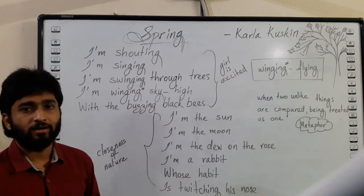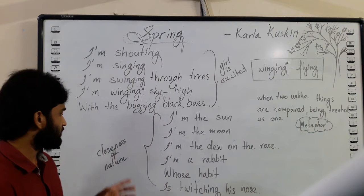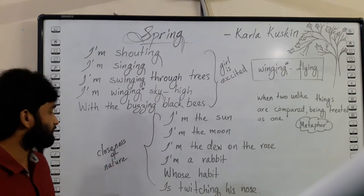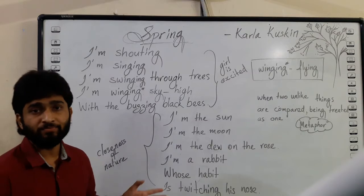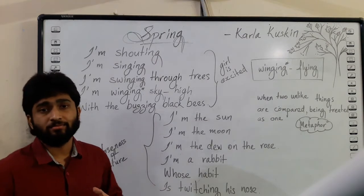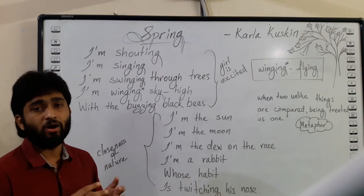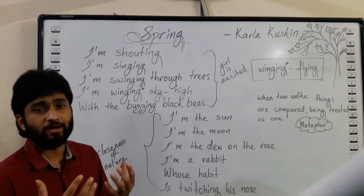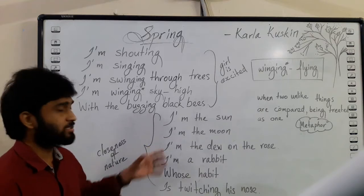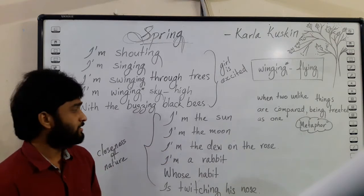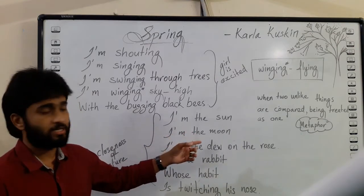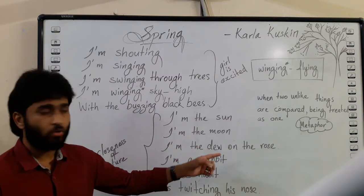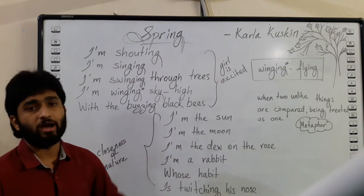In this stanza, we can see the girl's closeness to nature. The girl becomes one part of nature by saying: I am the sun, I am the moon, I am the dew and the rose, I am the rabbit.